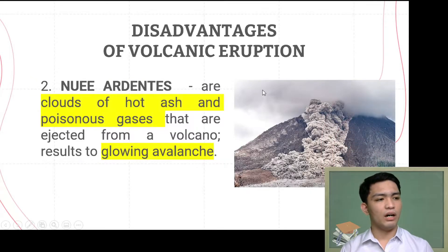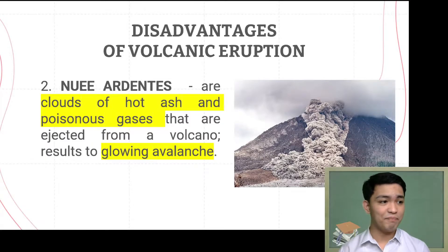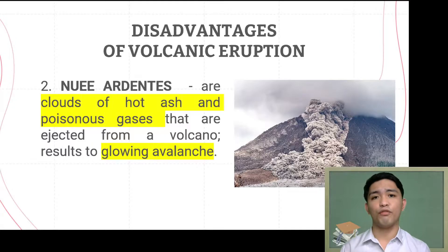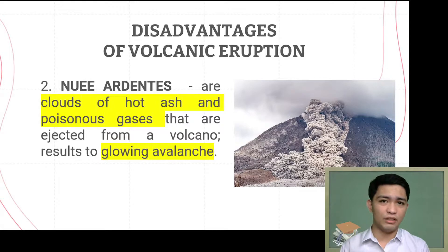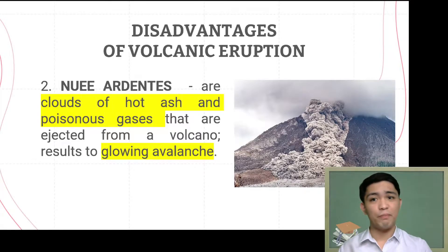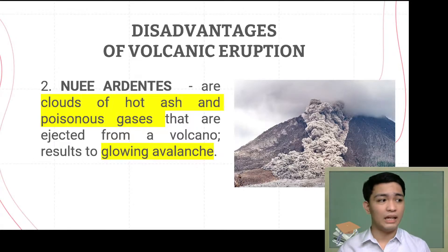The second disadvantage is what we call Nuée Ardente. Nuée Ardentes are clouds of hot ash and poisonous gases ejected from a volcano. Volcanoes do eject different gases during eruption. Typically there is a mushroom cloud of gas going upward, but Nuée Ardente is different — its flow goes downward. It is the flow of hot gases and ash rather than pyroclastic material with water.